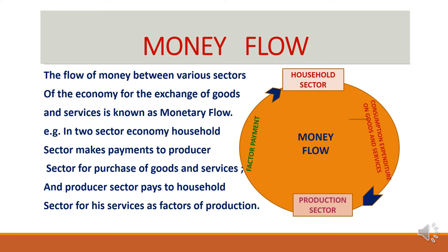We can take an example of the two-sector economy. In this figure, there is a household sector and a production sector. The household sector pays an amount to the production sector for the goods and services it received, and similarly the household sector receives money from the production sector for the services the household sector provides to it. This type of flow of money between two sectors is known as monetary flow.